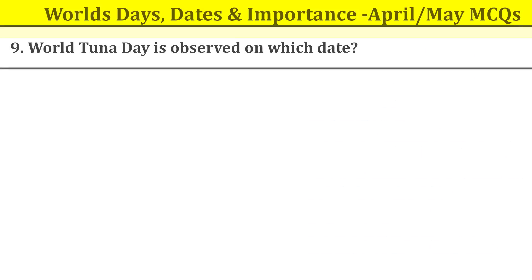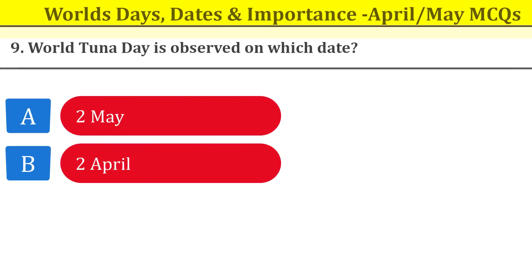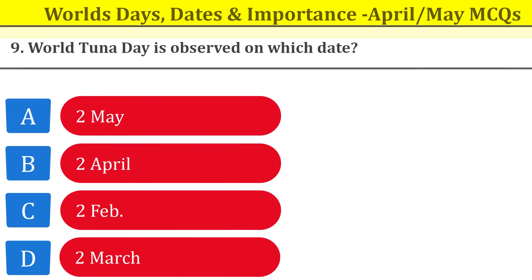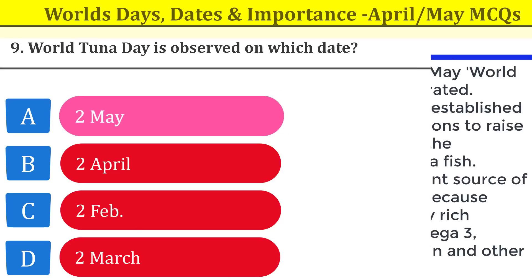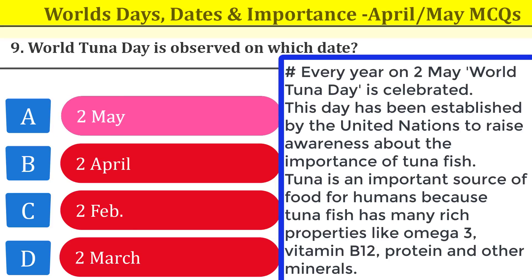Question number nine: World Tuna Day is observed on which date? It is observed on 2nd May. This day was established by the United Nations to raise awareness about the importance of tuna fish. Tuna is an important source of food for humans as it is rich in omega-3, vitamin B12, protein, and other minerals. Dear students, go through the quality content I am providing here — like, share, and subscribe.